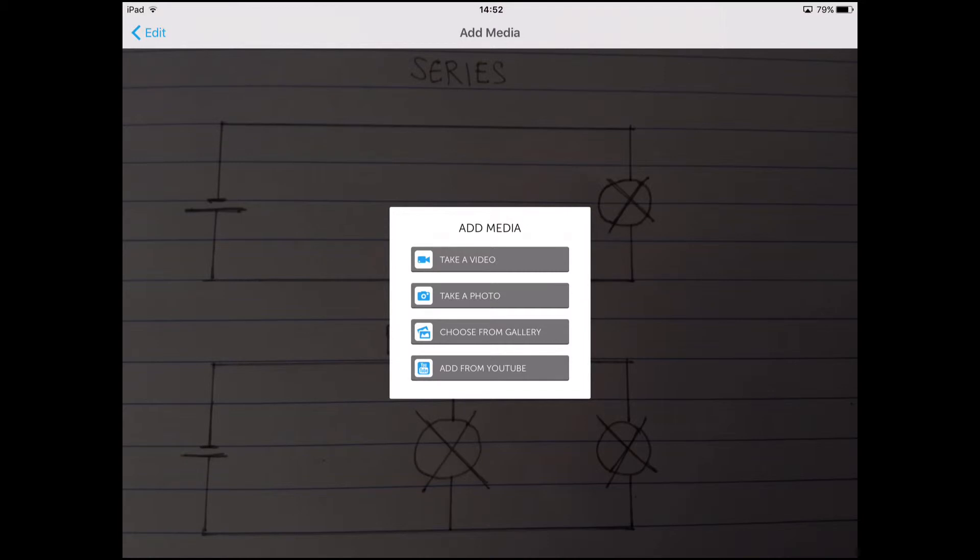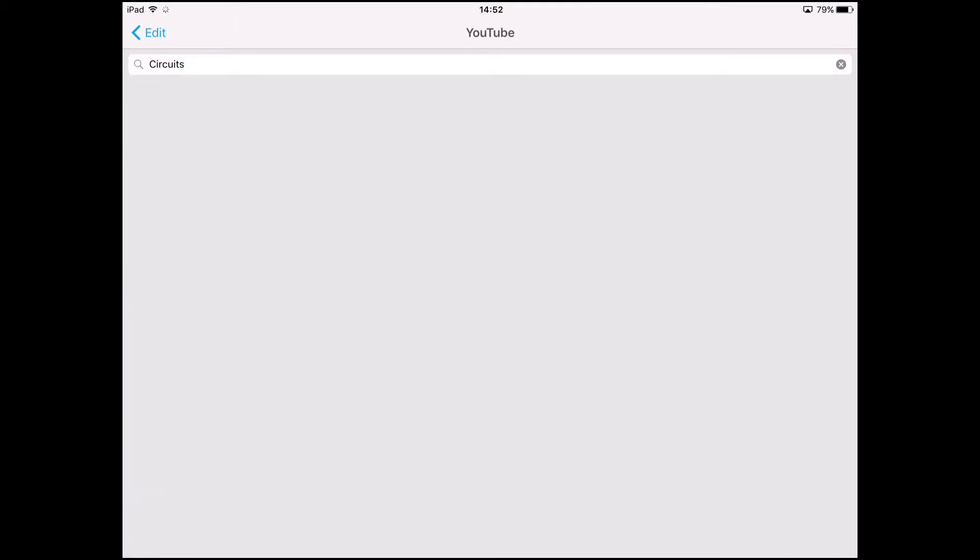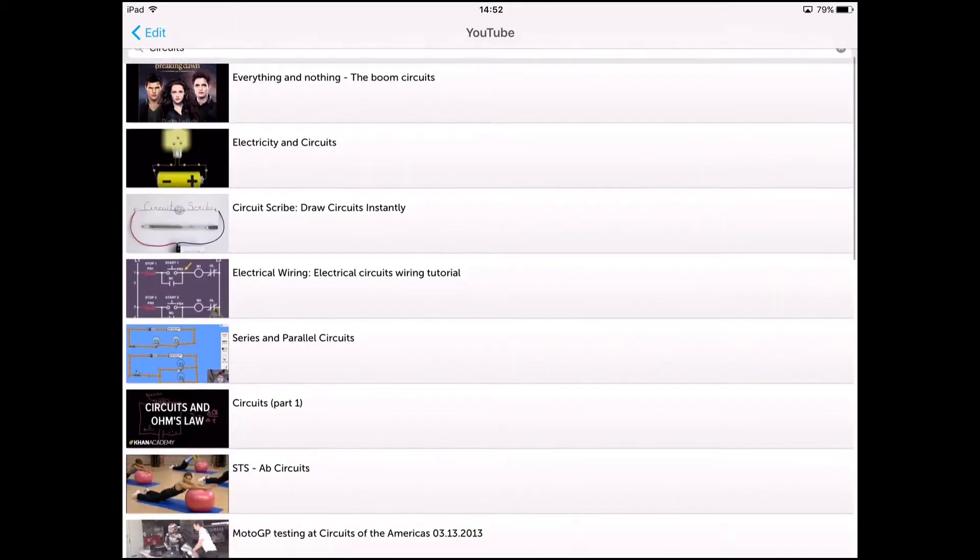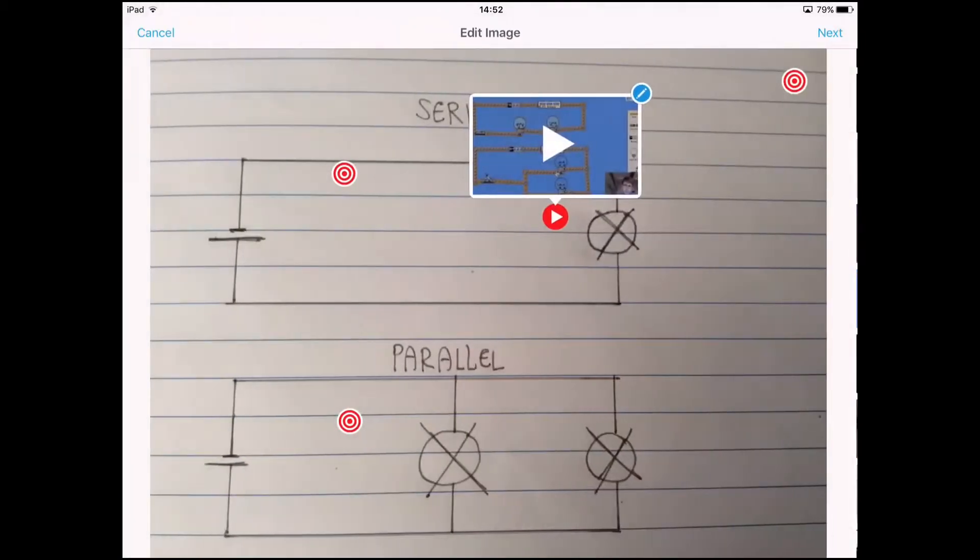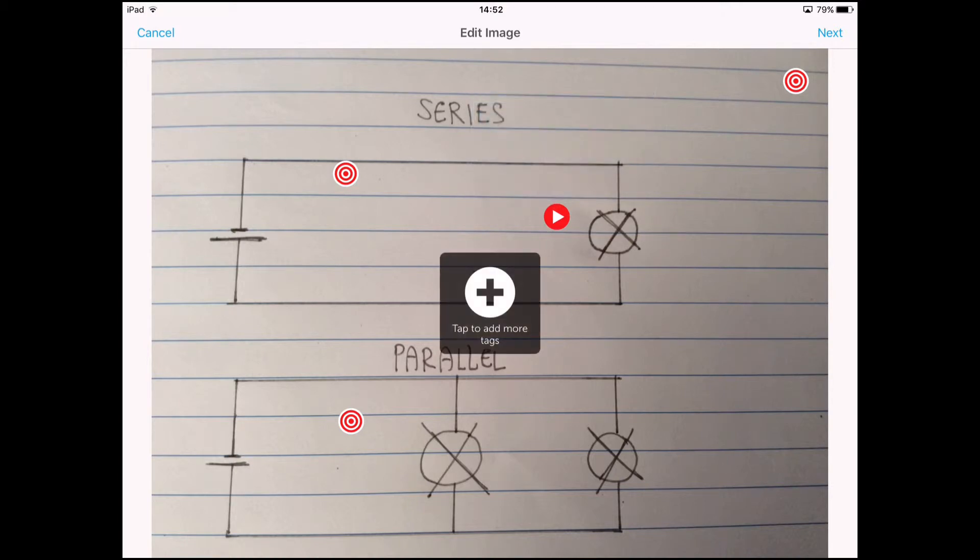I'm going to go straight from YouTube. Just type in what you want. My keyword is going to be circuits. Then just choose an appropriate video. There's perfect series and parallel circuits. And then it says you can add some more.